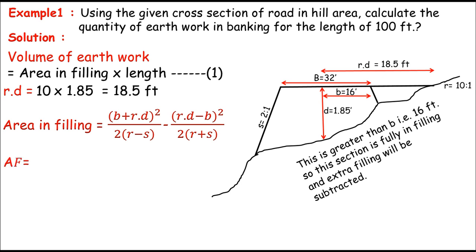Like area in filling represents the area in filling, which is equal to B. B is known right over here. That's the half formation width over here, which is 16 feet plus Rd. R is known, which is 10 and 1. Or you can say we can take 10 only. So 10 times D is also known 1.85. So 10 times 1.85. And whole square there divided by two times R. R is again known, which is 10 minus S. That's the side slope, which is 2 and 1. So minus 2.